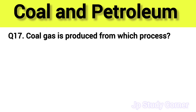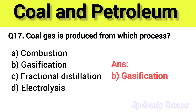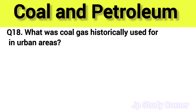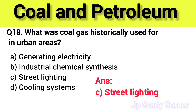Question number seventeen: coal gas is produced from which process? The right answer is option B — gasification. Question number eighteen: what was coal gas historically used for in urban areas? The right answer is option C — street lighting.